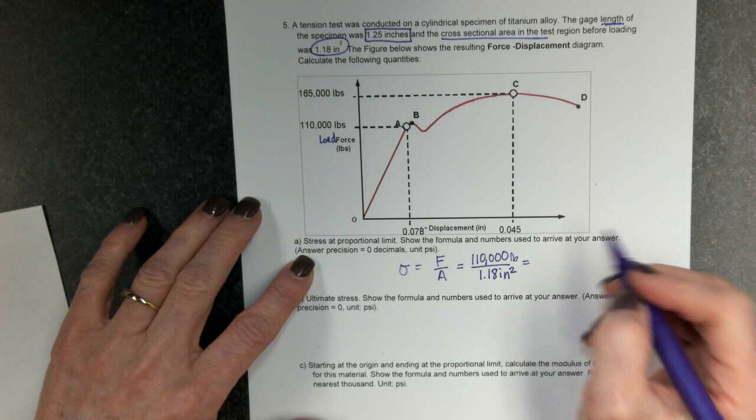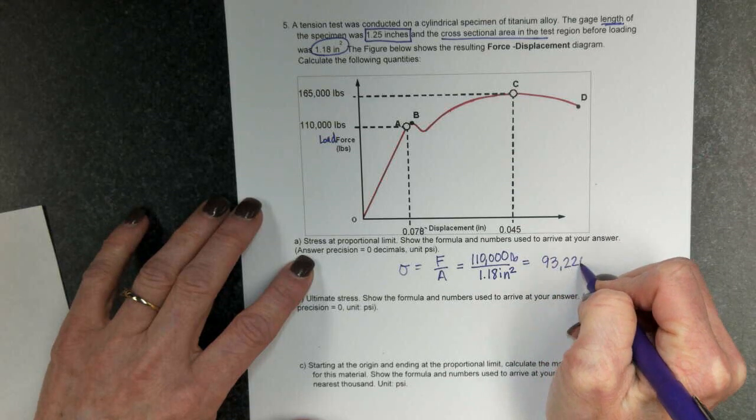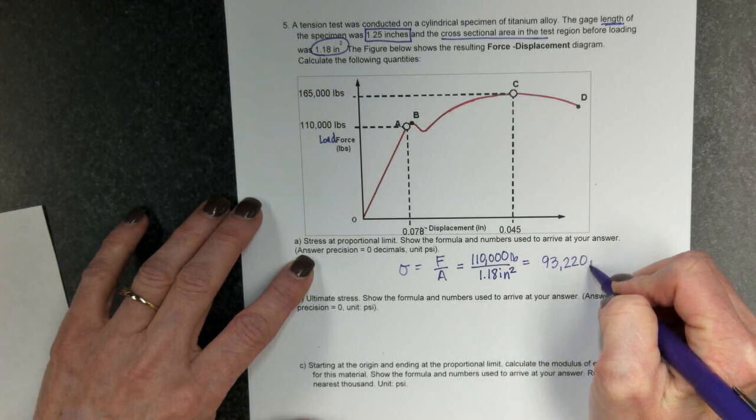And then when I divide this out, I get 93,220 pounds per square inch, or psi.